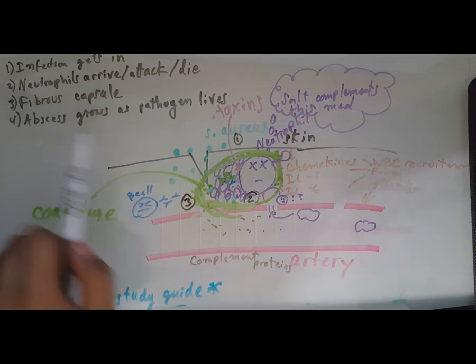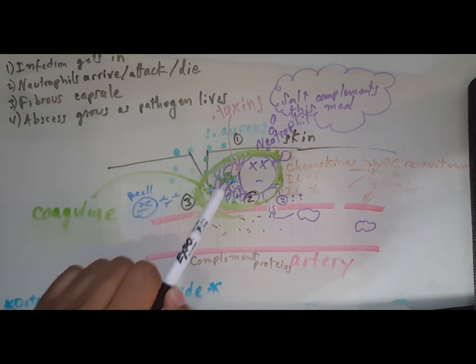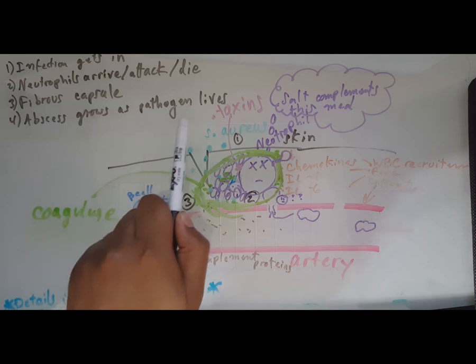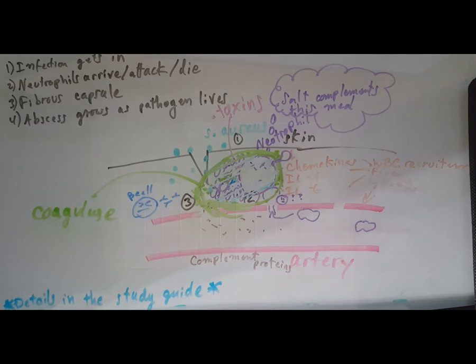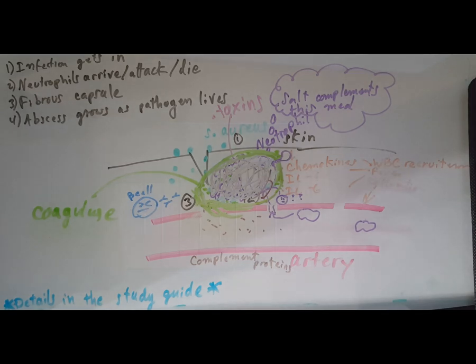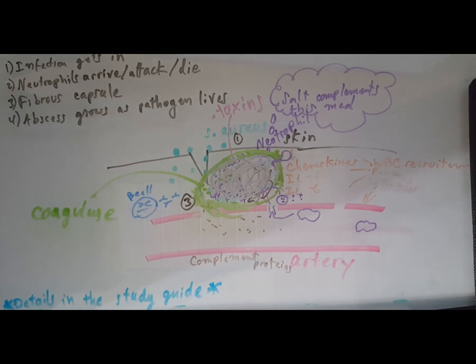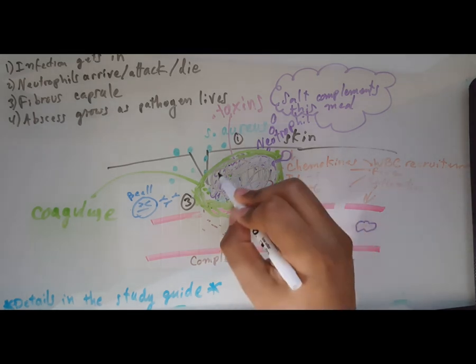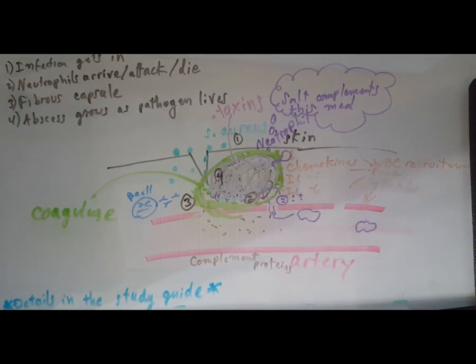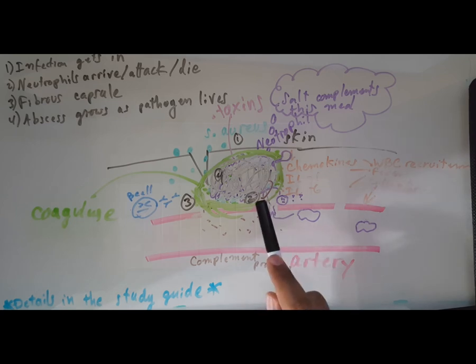Over time the bacteria inside - staph aureus in our case - will continue to grow. More neutrophils will continue to come in and die, and the abscess will continue to grow as the pathogen lives. You just get a big mess of staph aureus plus neutrophils plus debris. That's what an abscess looks like. That is the pathophysiology of how abscesses grow. Hope you learned something, have fun guys and girls.